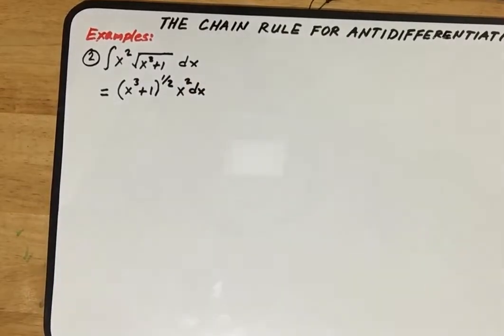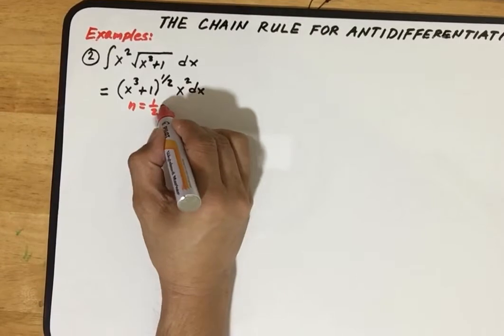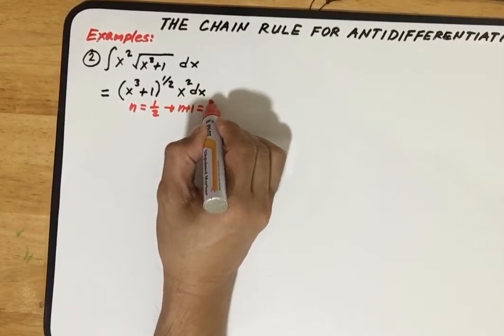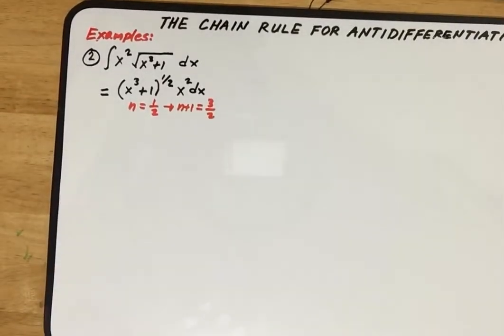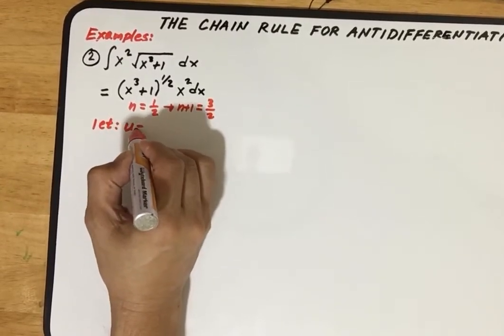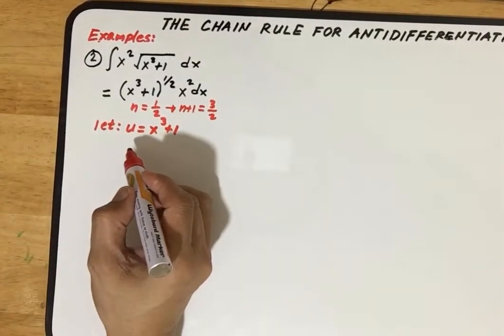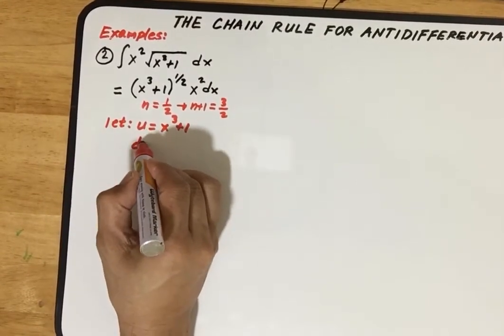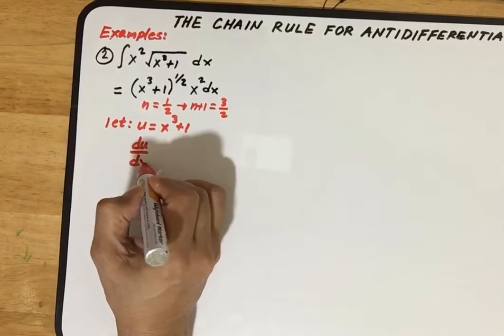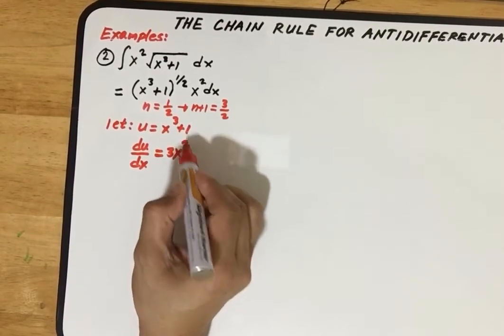After that we identify our u and n. Our n here is equal to one-half, so n plus 1 equals three halves. We let u equal x cube plus 1. Then we solve for du over dx, the derivative of u with respect to x, which equals 3x squared. The derivative of x cube is 3x squared, and derivative of 1 is 0.